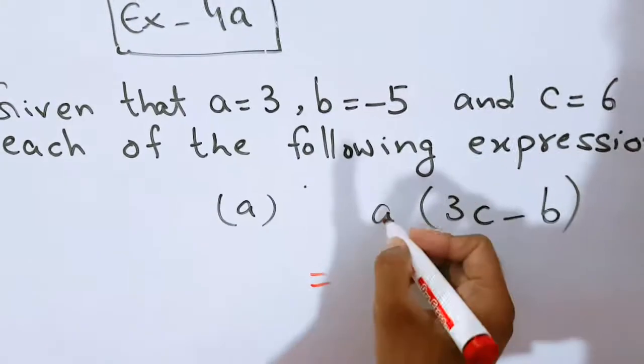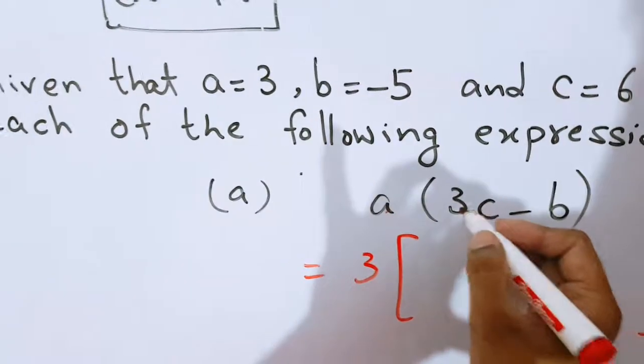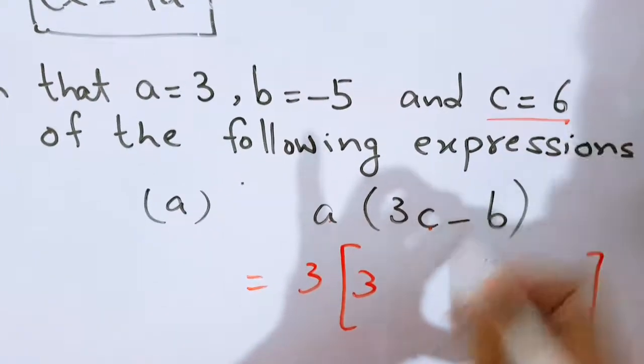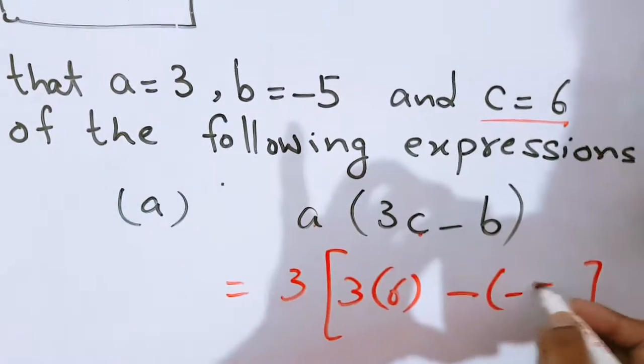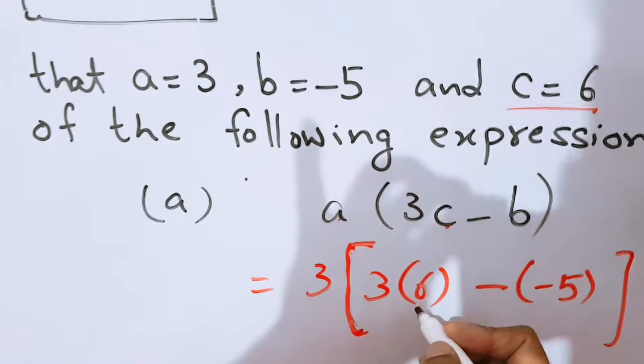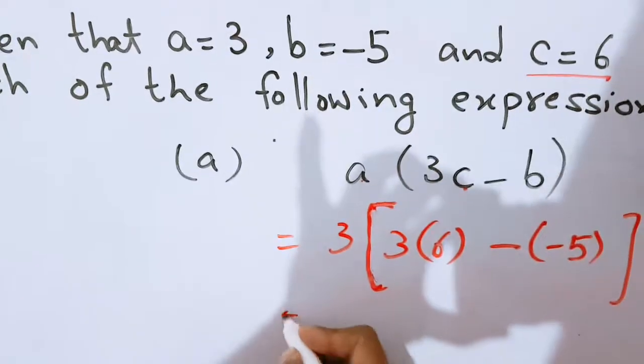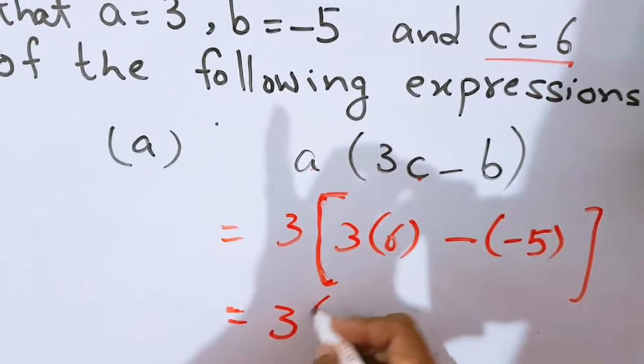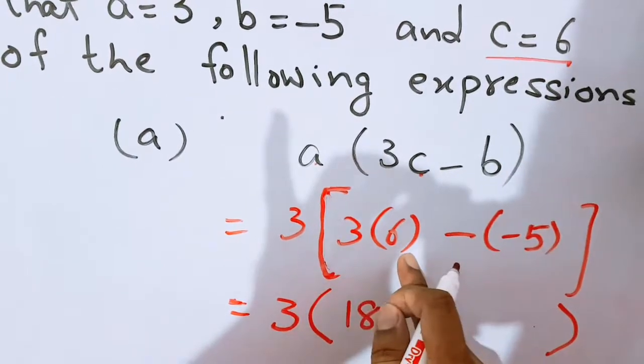In place of a, I shall write 3. In place of c, I shall write 6. And in place of b, I shall write minus 5. Students, I have placed this bracket because I knew that I have to place the smaller brackets inside. That's why I have placed this bigger bracket for my facility. Since smaller brackets will be solved and the bigger bracket will be turned into smaller ones now. 3, 6 times will be 18 and smaller bracket has been finished.